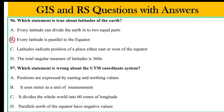Which statement is wrong about the UTM coordinate system? Positions in the Universal Transverse Mercator are expressed by distinct values. It uses meters as a unit of measurement. It divides the whole world into zones of longitude. The parallel south of the equator has negative values — this is the wrong statement, as parallels south of the equator do have negative values.